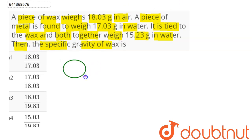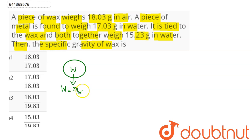First of all, suppose this is the wax. The wax in air weighs 18.03 grams, so this is equal to the mass of the wax into g, which is given as 18.03g.